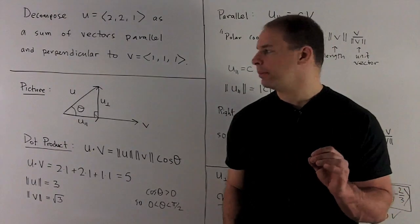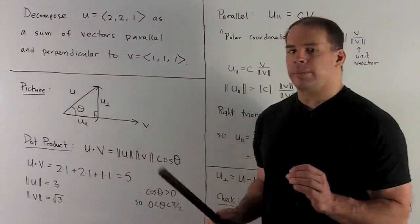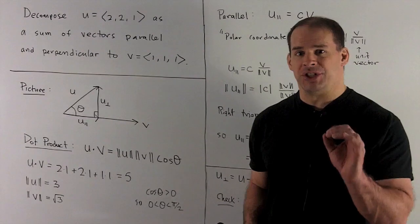First the picture. Here we have u, we have v. I'm not too worried about getting a precise picture, we just want to see how the geometry comes in.